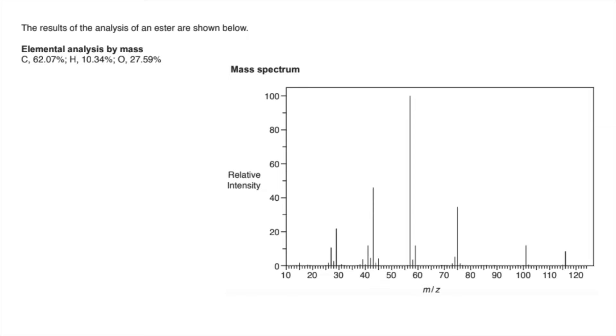The first thing I'll deal with is the elemental analysis by mass. That's obviously going to be an empirical formula calculation, so fairly straightforward there. The thing I'd always remember to do is always work out the MR of the empirical formula.